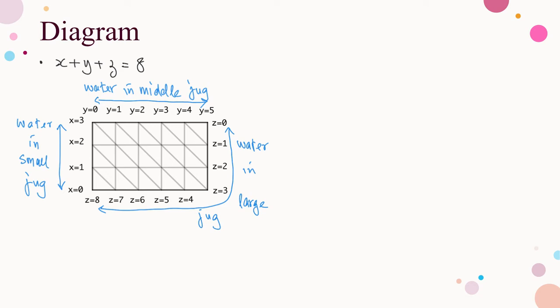It can also be obtained directly from the diagram. Let me show this with examples. When x equals 3 and y equals 5, it is represented by the upper right corner, and clearly z equals 0. For z equals 1, there are two possible cases: (2, 5, 1) and (3, 4, 1). The first case is clear, and the second can be seen by the diagonal drawn from the point where x equals 3 and y equals 4.